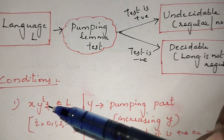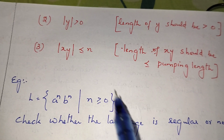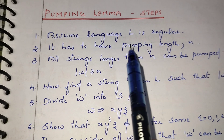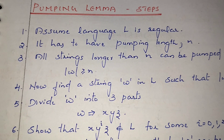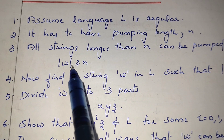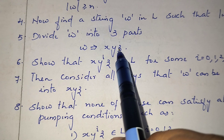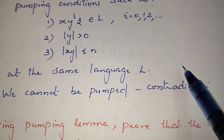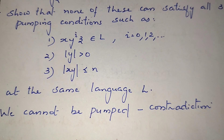The conditions are: x·y^i·z belongs to L, y is the pumping part and should not be empty, and the length of xy must be less than or equal to the pumping length. The steps for applying pumping lemma are: first, assume the given language is regular; take some pumping length n; find a string w in L such that the length of w is greater than or equal to n; divide the string into three parts; apply the conditions. If any condition fails, the assumption is wrong — that is, the language is not regular. This is a contradiction, proving the language is not regular.